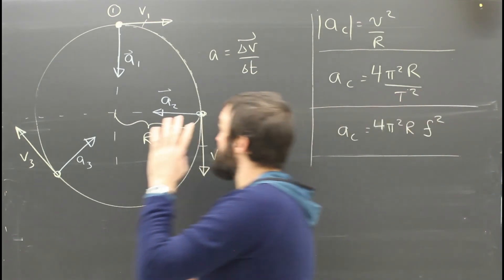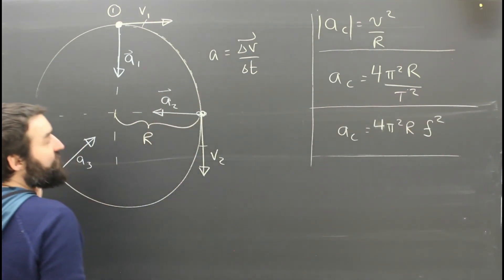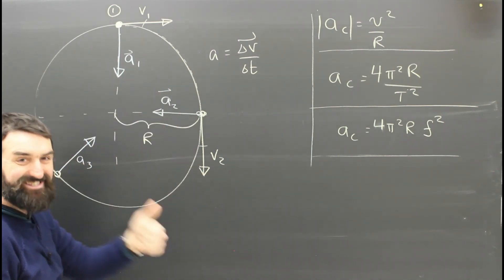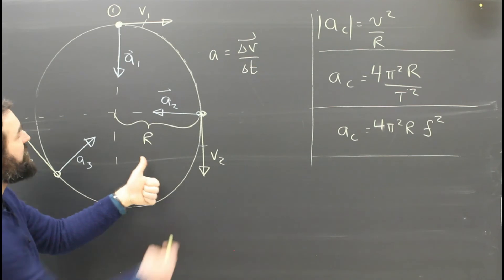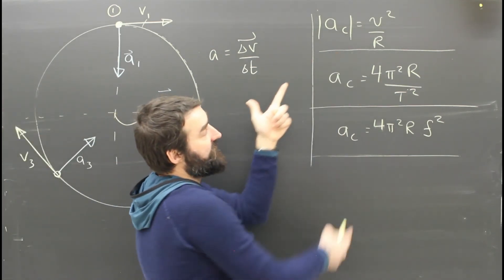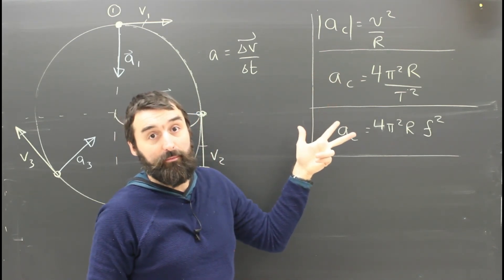So, a couple of things that you want to make sure that you understand. Uniform circular motion. Circular motion at a constant speed is still acceleration. The acceleration is directed towards the center of the circle, and it is given, its magnitude is given by one of these three formulas.